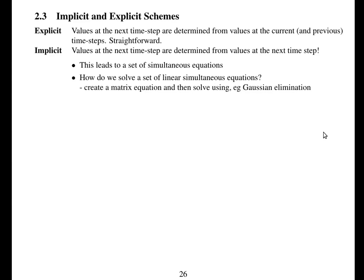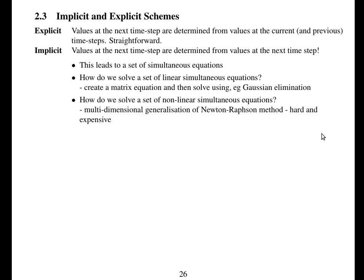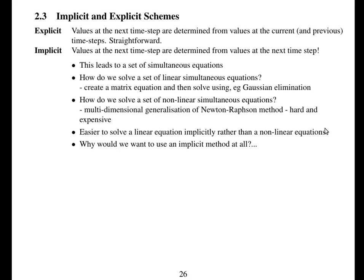You create a matrix equation and solve it — for example, using Gaussian elimination. Later in the course you'll look at better ways of solving large systems of simultaneous equations. Non-linear simultaneous equations are much more difficult, requiring something like a multidimensional generalisation of the Newton-Raphson method. However, we're solving the linear advection equation with a linear finite difference scheme, leading to a set of linear simultaneous equations — relatively straightforward to solve. Why would we want to use an implicit method at all? This is a question to consider during the assignment.